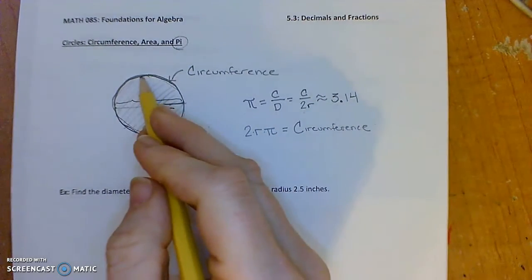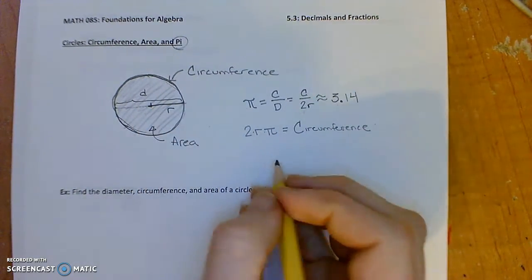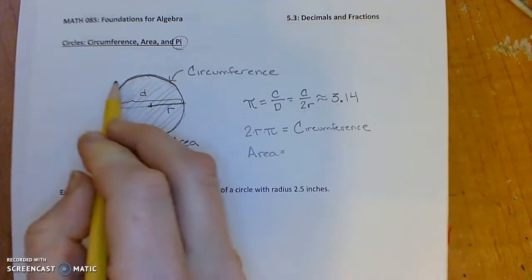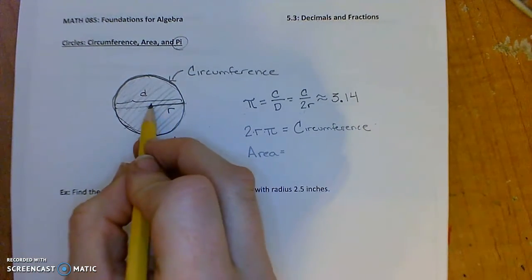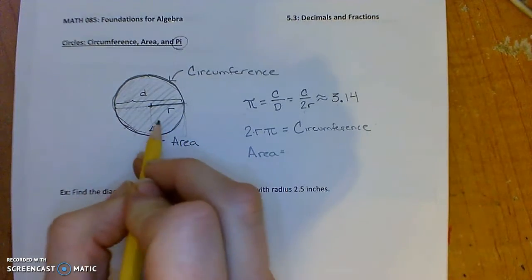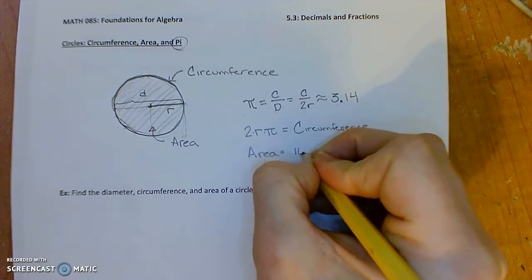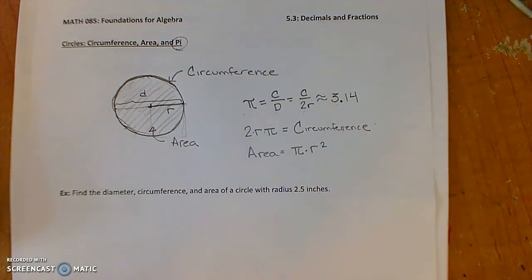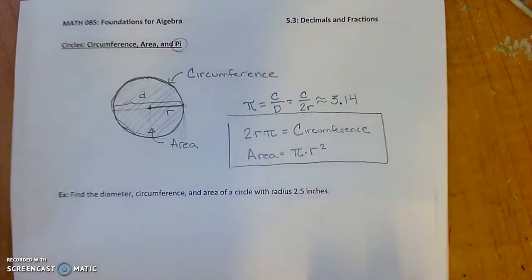And also to find the area or the space taken up in the interior of the circle, area is equal to, normally for a square it would be like the side times the side. Think like if you had a square here with side length r, it would be r times r or r squared. For a circle, the area is pi times r squared, or pi times r times r. So these are our two formulas that we'll use.